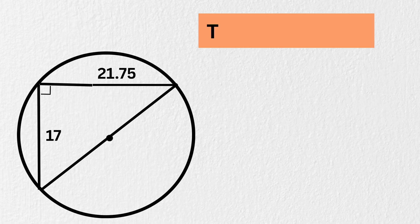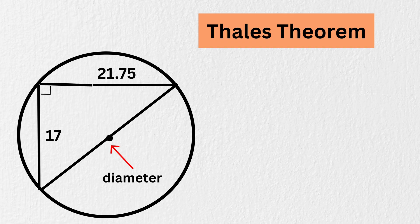Here comes another theorem called Thales' theorem. It states that if a triangle is formed inside a circle with one of its sides as the diameter of the circle, then the angle opposite to the diameter is always a right angle, or 90 degrees.